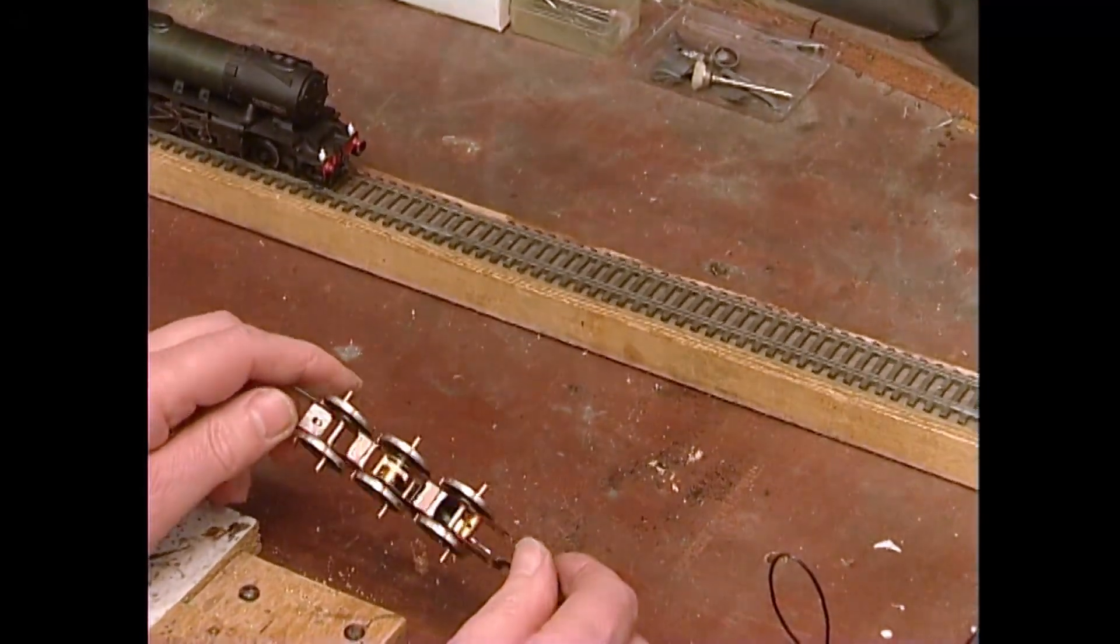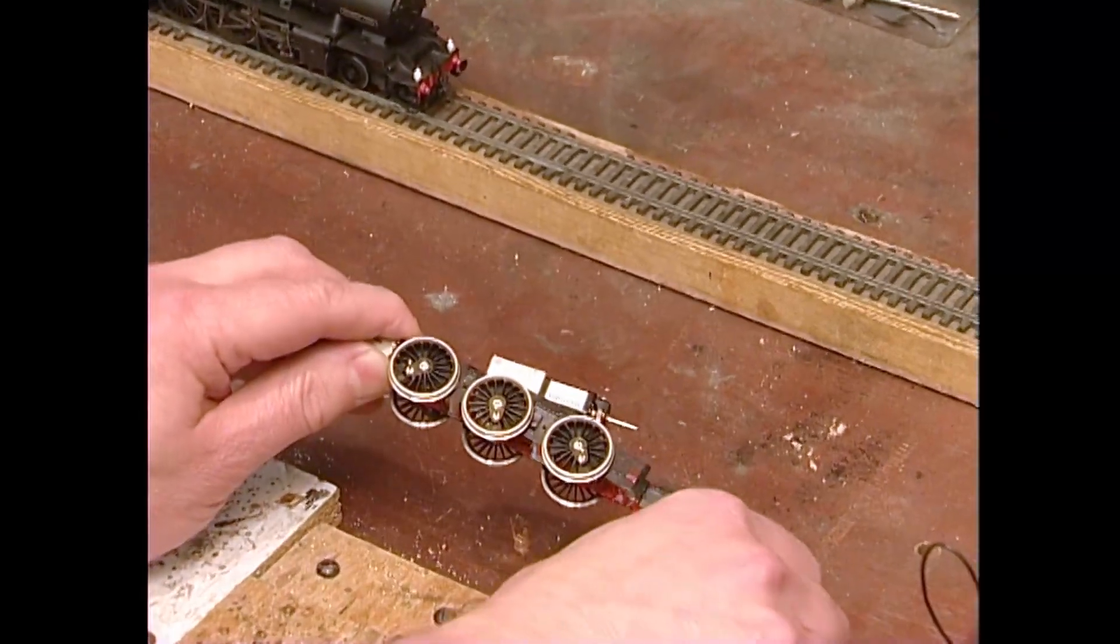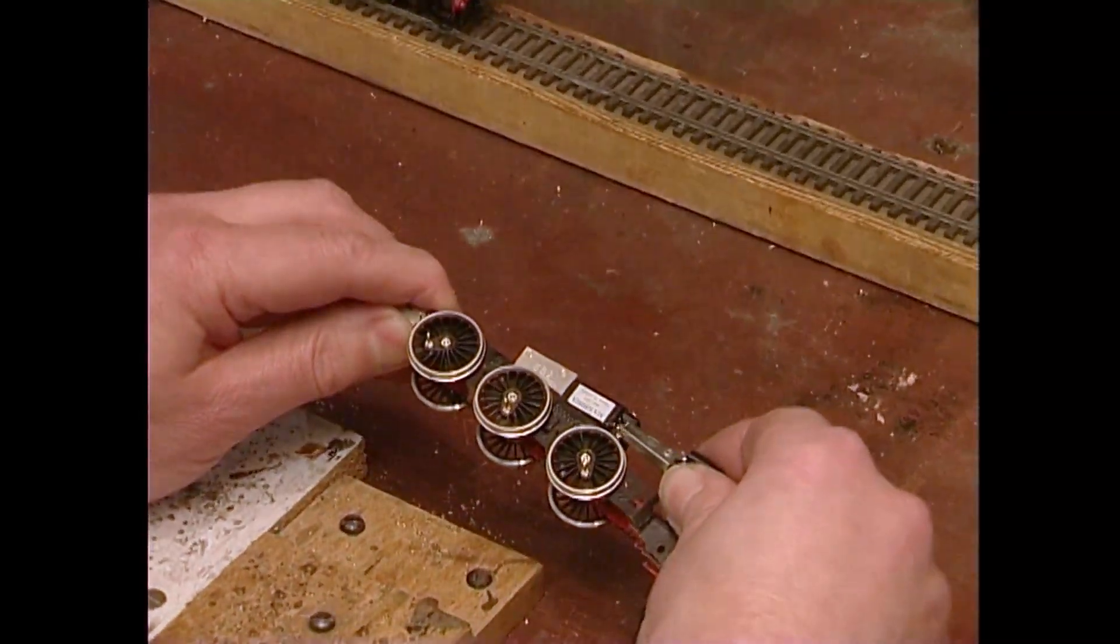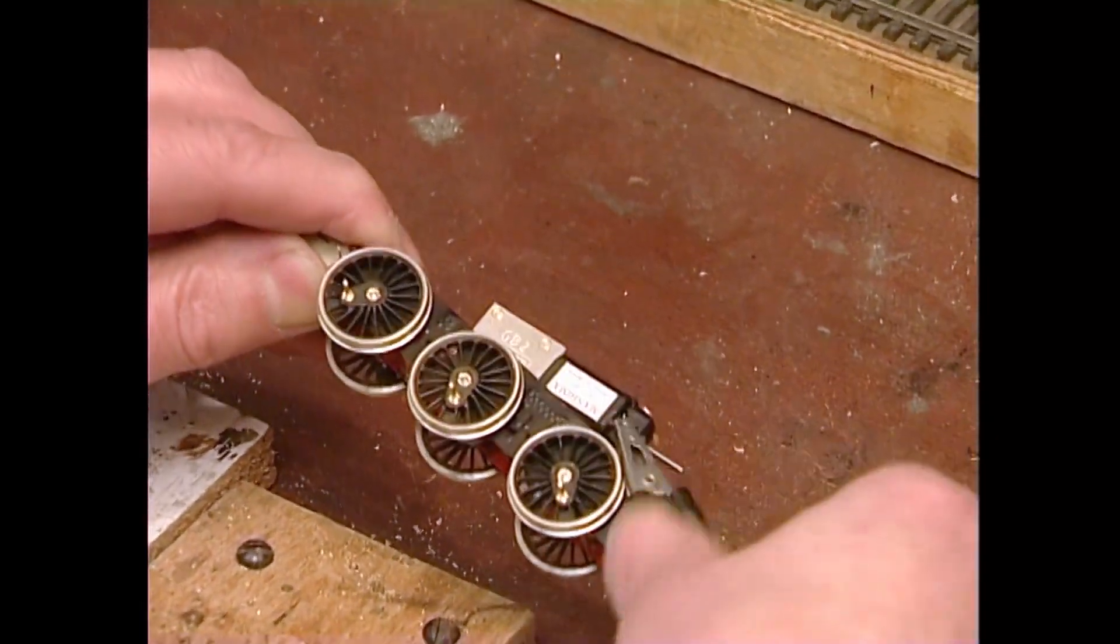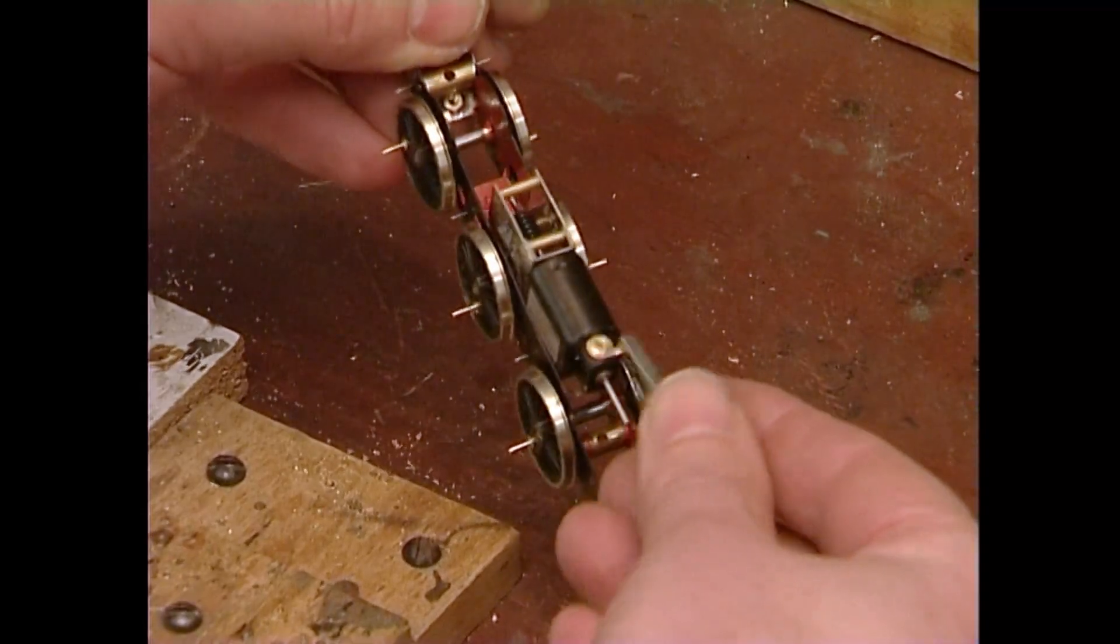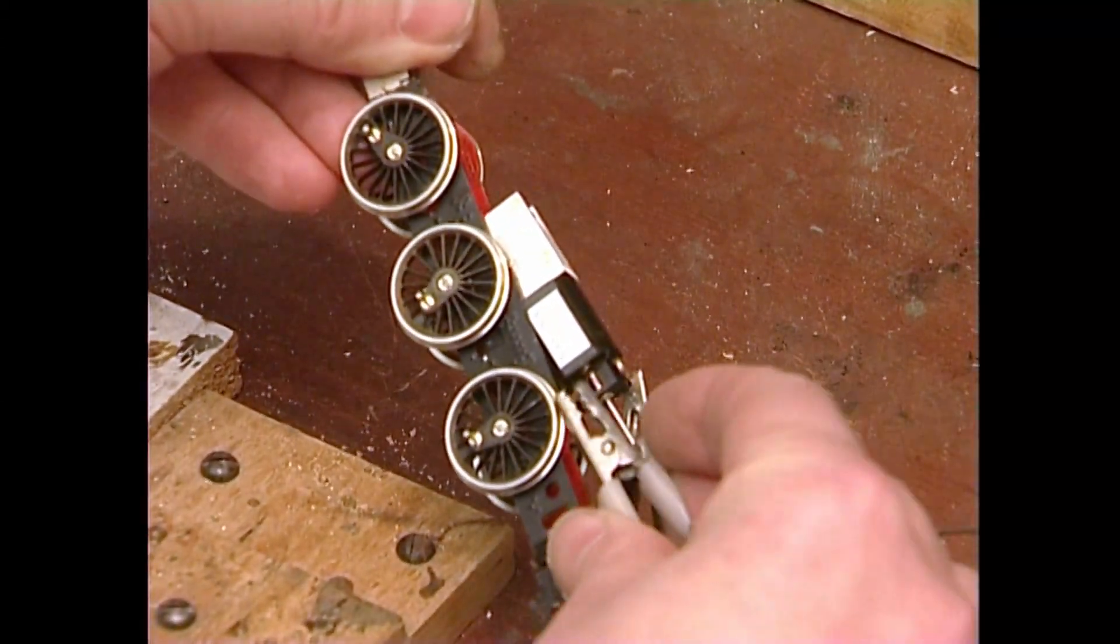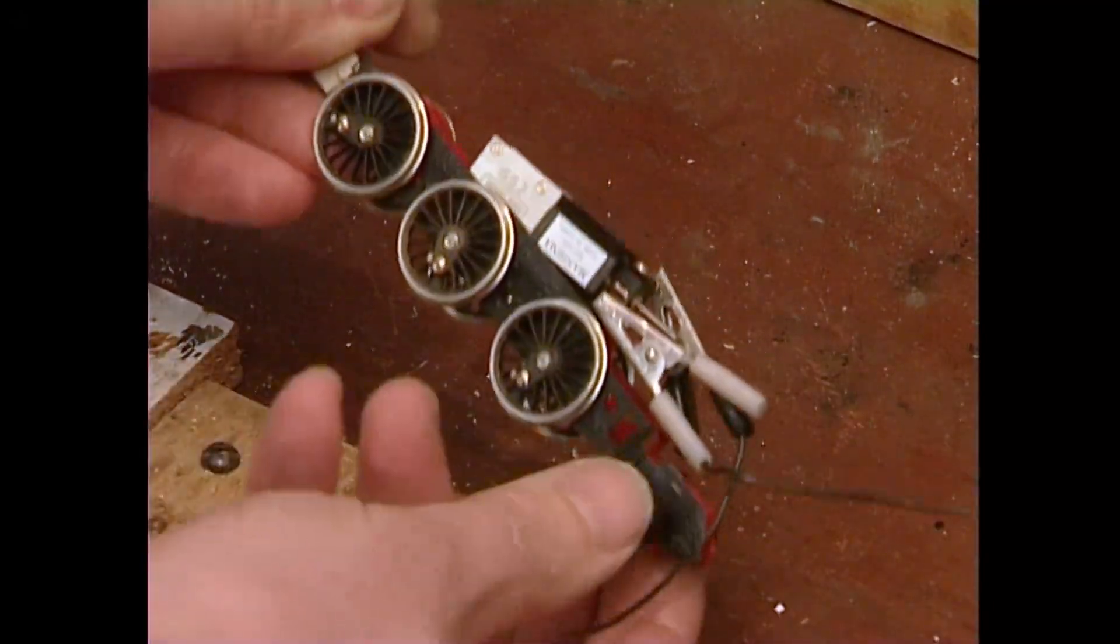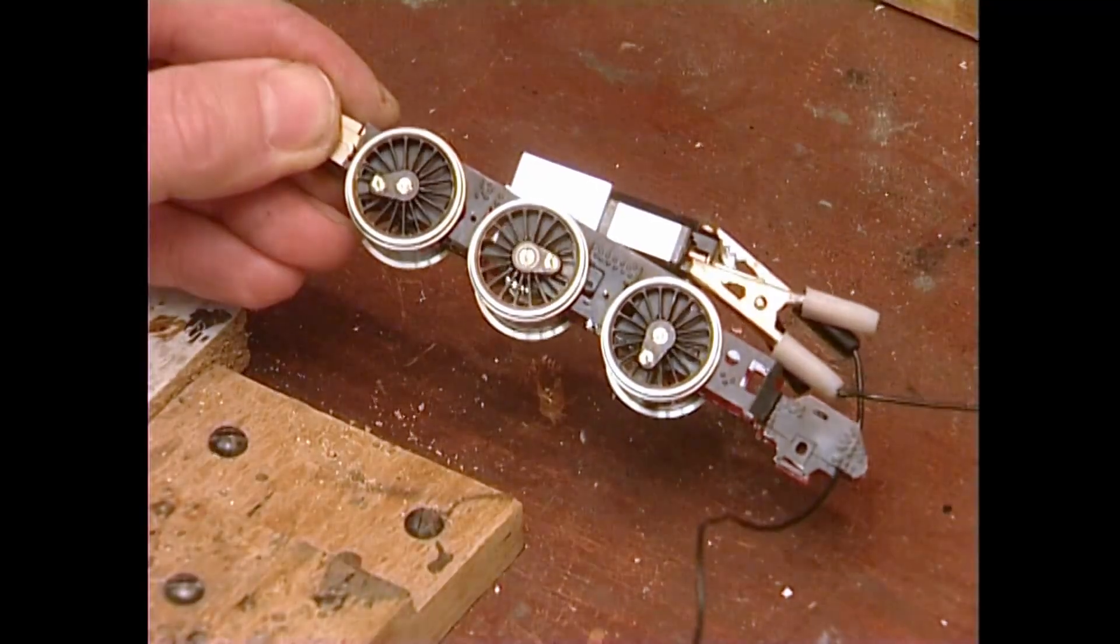I've now engaged the gearbox onto the driven axle by tightening the grub screw. I'm just going to make sure at this stage, before any rods are put on, that the gearbox assembly runs properly, with no binding. Just attaching a pair of crocodile clips from a 12 volt supply.